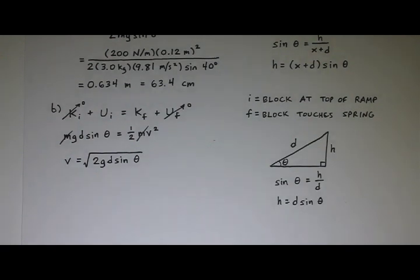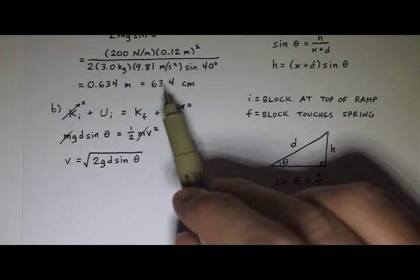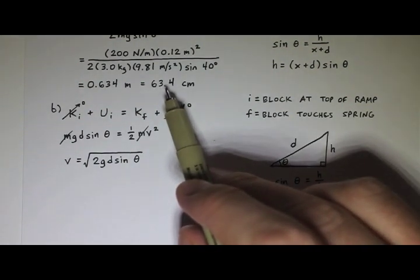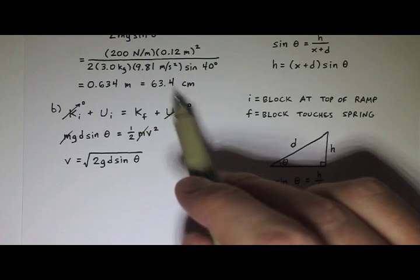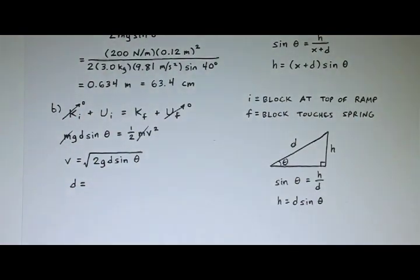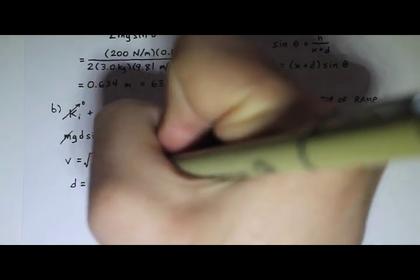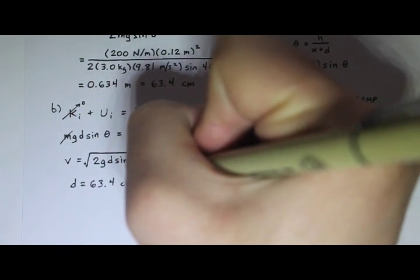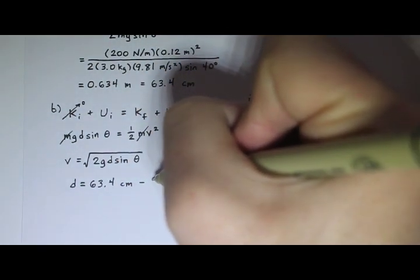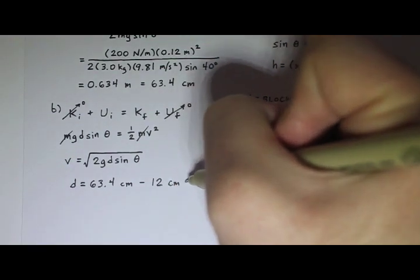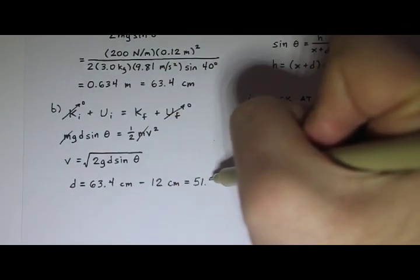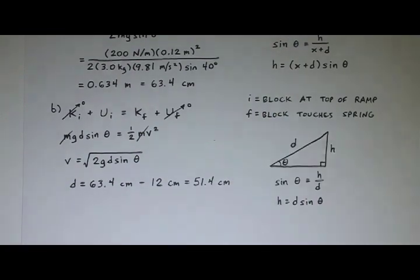Now, I'm not quite ready to plug in here because I don't know what d is. I know what x plus d is. I remember, solved in part a, x plus d was 63.4 centimeters. And I know that x was 12 centimeters. So before I plug in, I should calculate what d is. So d is going to be 63.4 centimeters minus the 12 centimeters for x. And so that tells me that d is 51.4 centimeters. Now I'm ready to plug in.